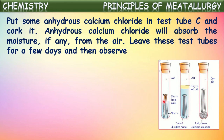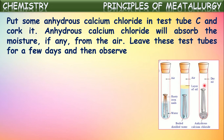Let us recollect the points: in test tube A, iron nails are in contact with both water and air. In test tube B, iron nails are in contact with only water but not air, because they are covered with an oil layer. In test tube C, iron nails are in contact with only dry air — no moisture or water, because anhydrous calcium chloride completely absorbs the water vapor present.